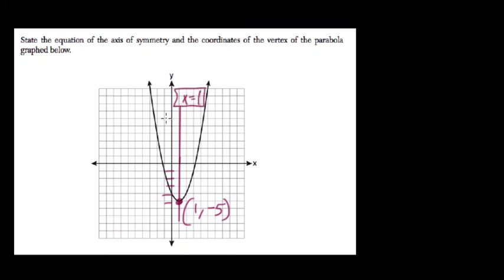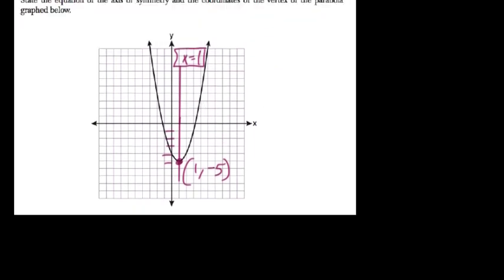So that's it. The axis of symmetry cuts your parabola in half and goes through the vertex. And the vertex is the max or min.